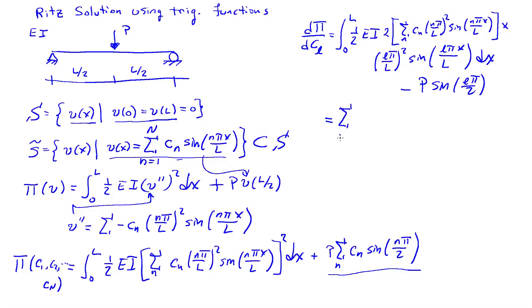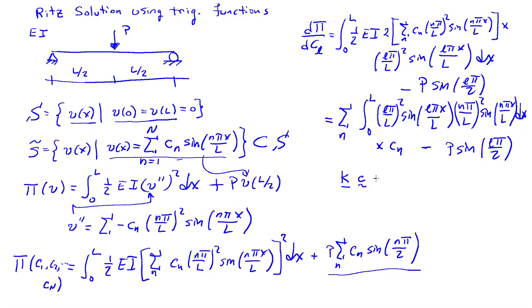And we can rearrange this a little bit, so let me pull the summation sign out, so we'll have the sum on n, integral 0 to L, I'll write this as L pi over L squared, sine of L pi x over L, times n pi over L squared, sine of n pi x over L dx, times Cn, and then minus P sine L pi over 2. So if you look at this a little bit here, what you see is that I really have a relationship of the following form, I have a matrix K times a vector C is equal to a vector F, and we just needed to find the components of the matrix and these two, and the vector F.